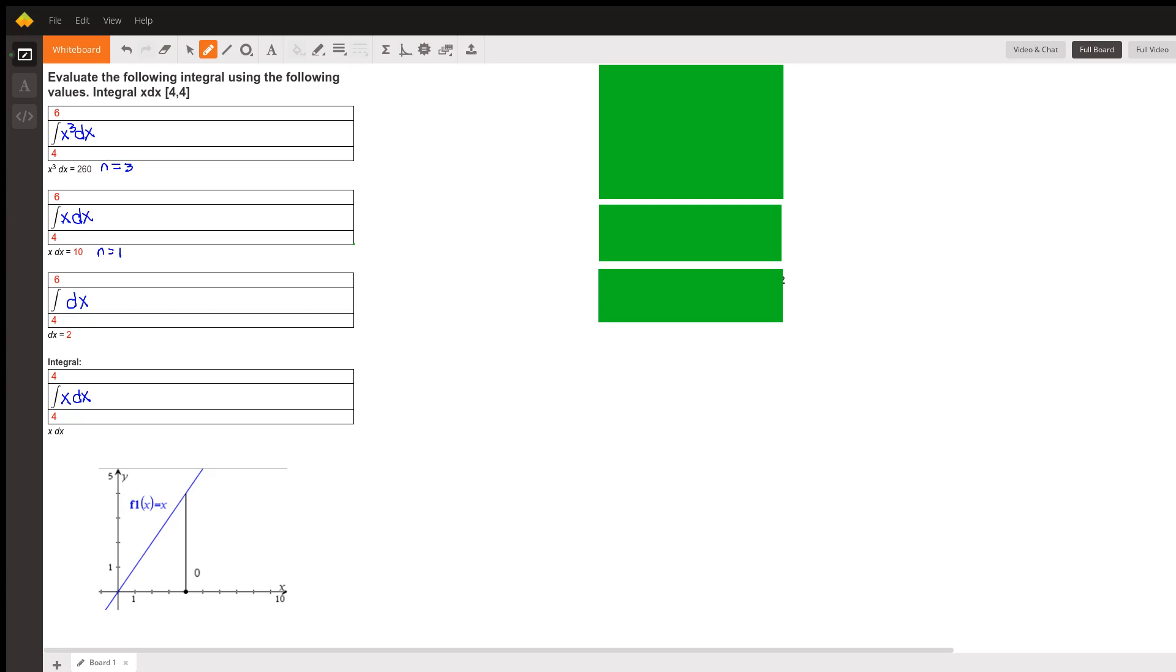The integral gives us, or the definite integral gives us, the area between the graph of the function's curve, in this case x cubed, and the x axis, from 4 to 6 in this case. So the area bounded by the graph of x cubed, the x axis, and x equals 4, and x equals 6.